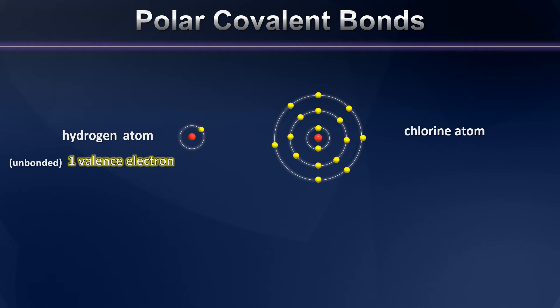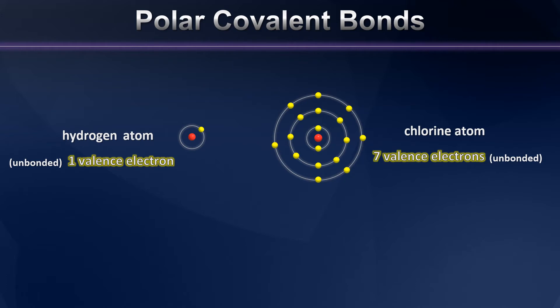Now let's turn our attention toward chlorine. The chlorine atom has seven valence electrons when not bonded, meaning it would like to get one electron out of the deal to complete its valence shell. So here we have again two atoms that are going to want to share electrons so that they can both feel as though they have a full octet.